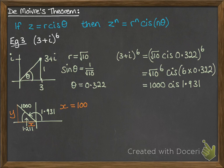So x will be 1,000 cos times 1.211, and y will be 1,000 sine times 1.211. Just basic trig there. And then put that back into x plus iy form.